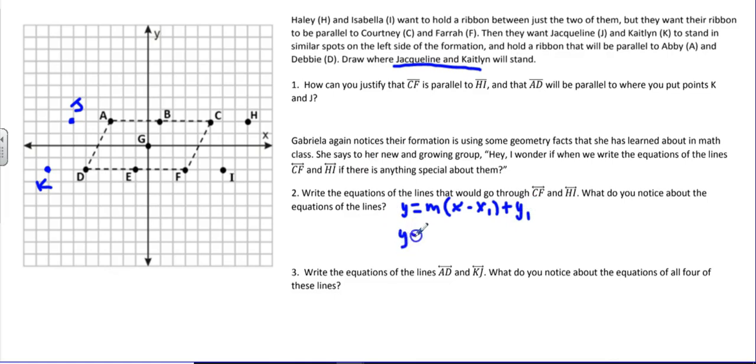So y equals the slope of, let's start with CF, is 4 over 2 or 2 over 1. So the slope is 2. I'll have x minus and then I need a point here. So let's just use point C. That's 5 over and up to 5 plus 2. So that's for CF.